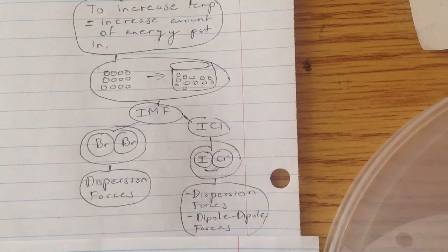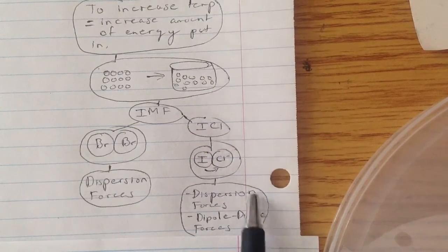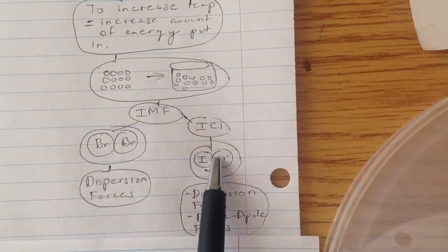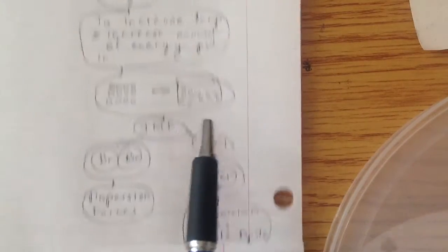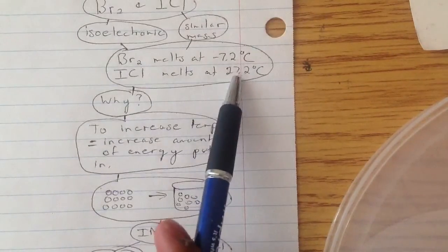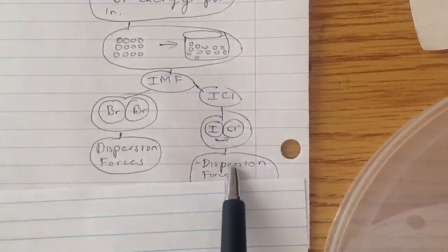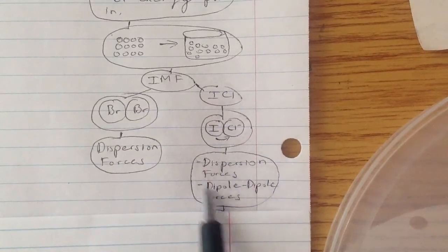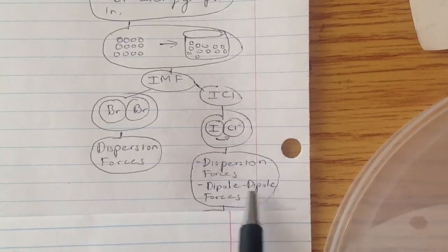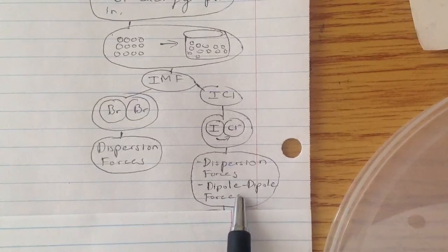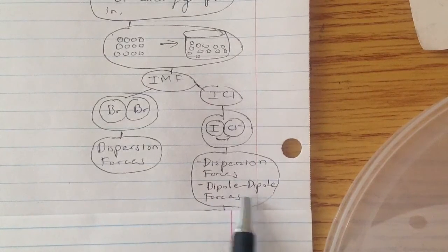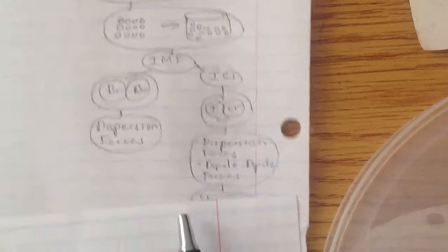So this actually explains why you need to put in more energy, why it melts at a higher degree than Br2. This explains it because you not only have dispersion forces, you have one more force. And the more forces you have, the more energy to break them.